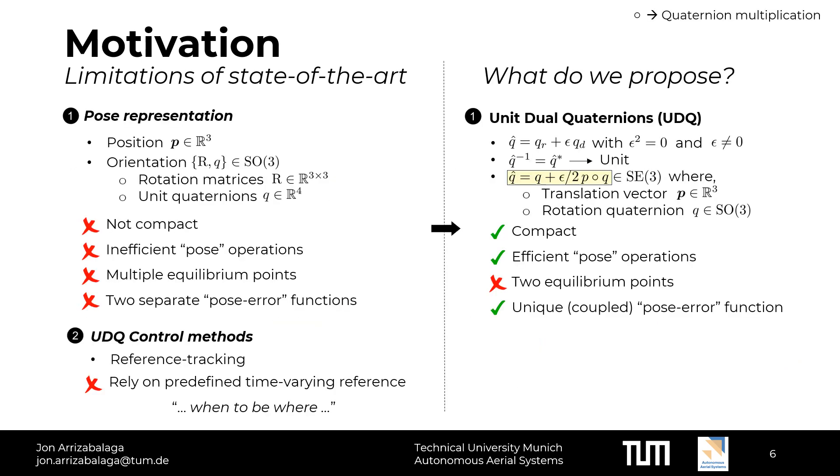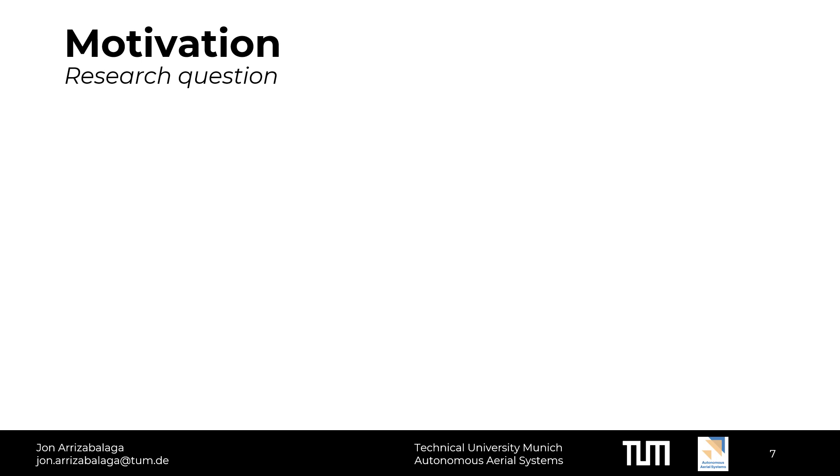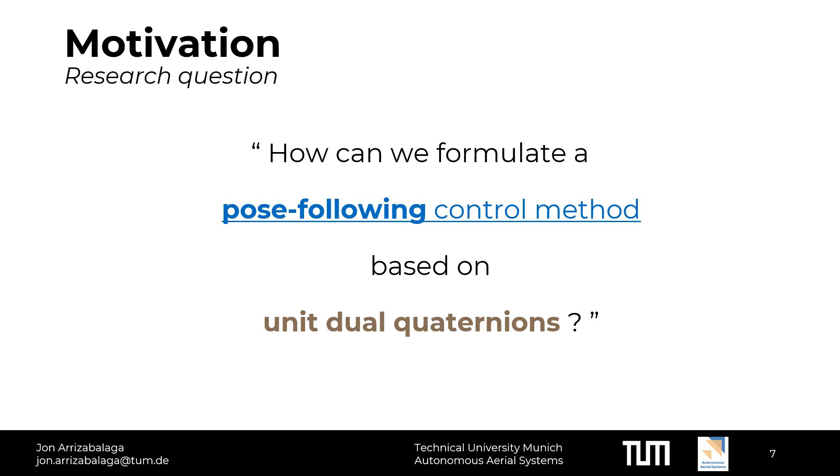Having clarified the benefits of path following, let's get back to the previous slide. As mentioned before, the appealing attributes associated with unit dual quaternions have caused increased popularity as pose parameterization for designing control methods. However, the existing literature limits the applicability to reference tracking scenarios. Therefore, following the explanations in the previous slide, we suggest to formulate a unit dual quaternion based pose-following method, allowing us to overcome the fundamental limitations of tracking. The research question says as follows: How can we formulate a pose-following control method based on unit dual quaternions?